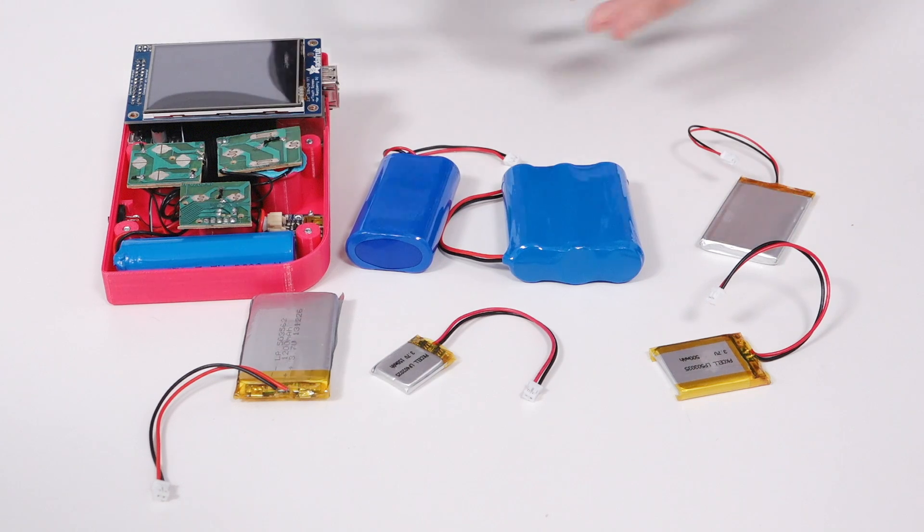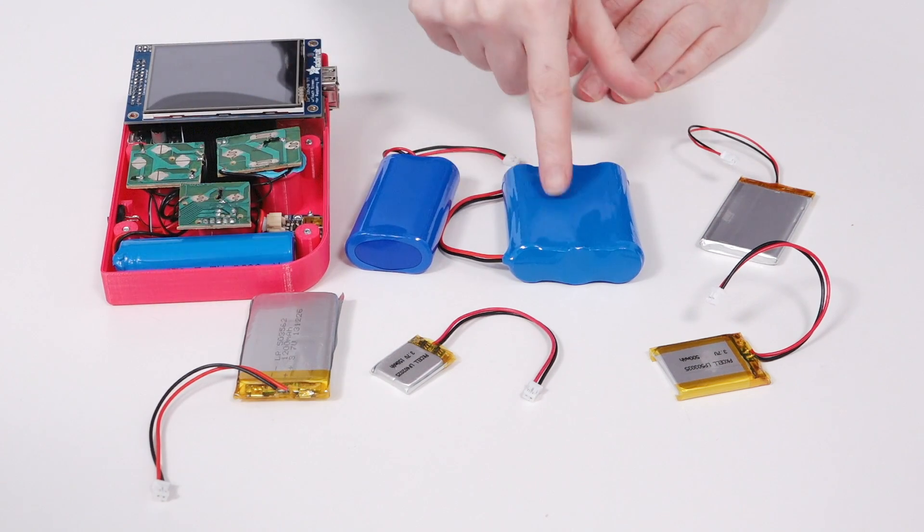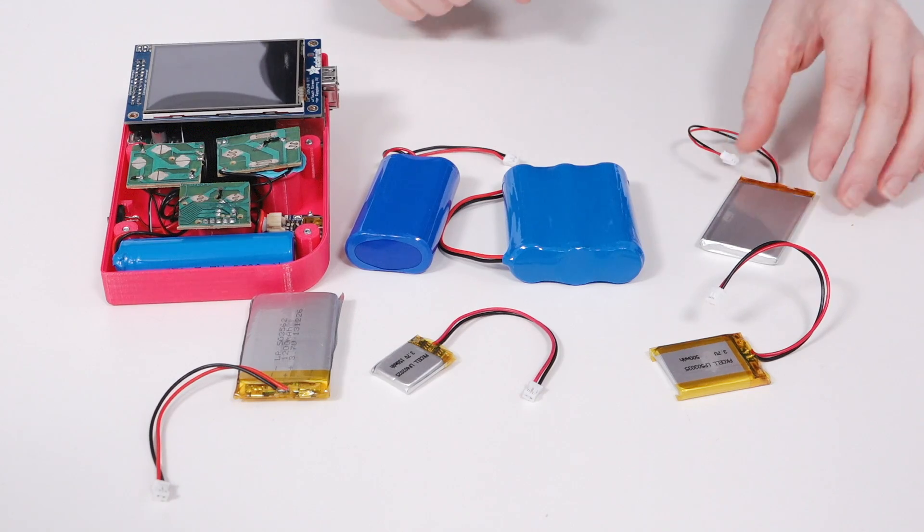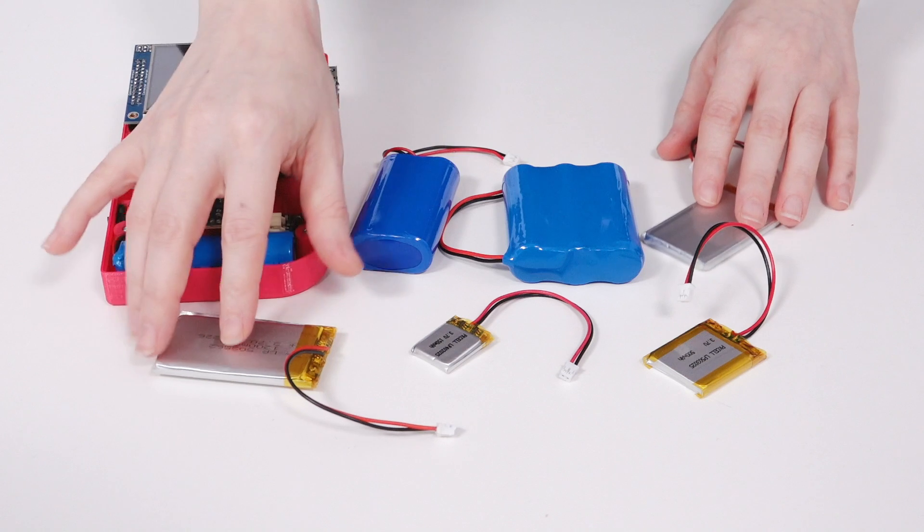Lithium-ion batteries, for example, tend to come in cylindrical shapes and they can be packed into multiple cells. Lithium polymer batteries come in these silver packets and they can come in a wide variety of shapes and sizes.